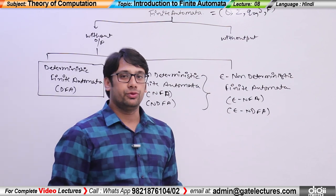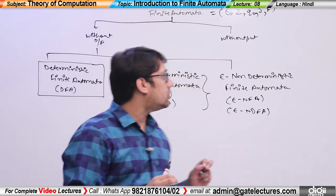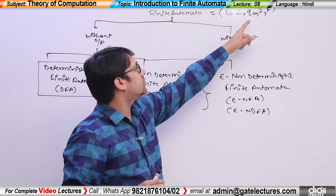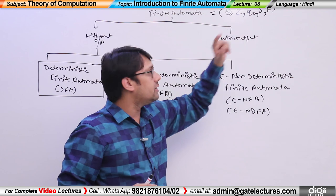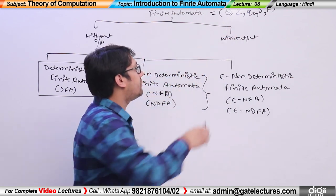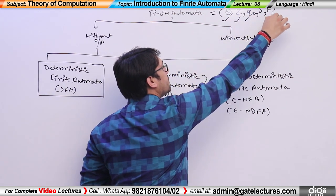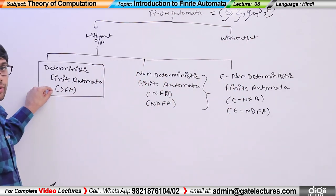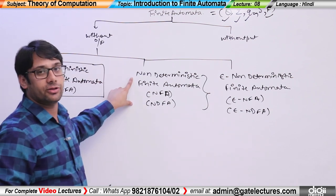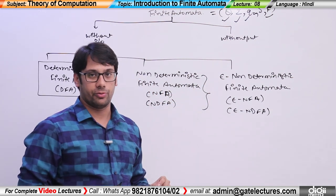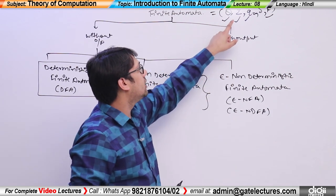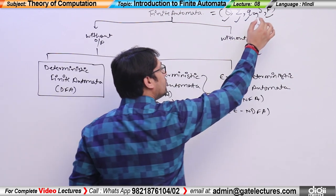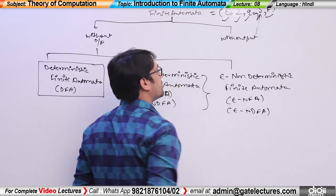If you ask what is the definition of finite automata, you can say: a finite automata can be defined by the tuple (Q, Σ, Q0, δ, F). Whether it is deterministic finite automata, non-deterministic finite automata, or epsilon non-deterministic finite automata — the tuple Q, Σ, Q0, δ, and F remains the same. The changes come in our delta, that is, the transition function.